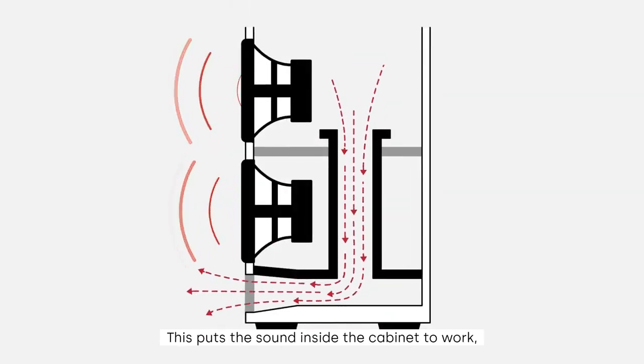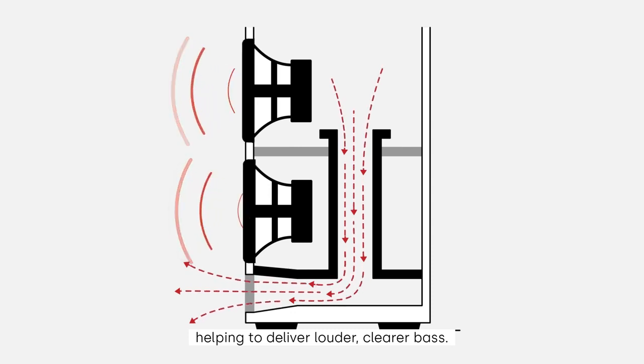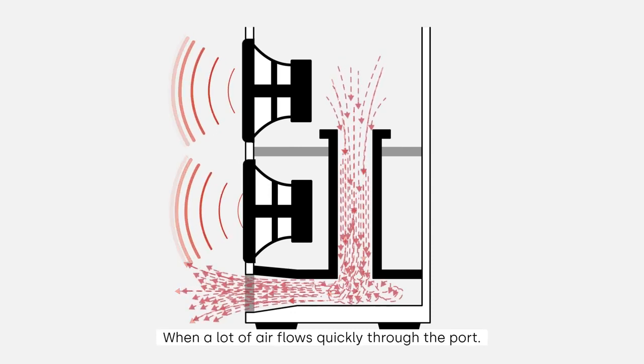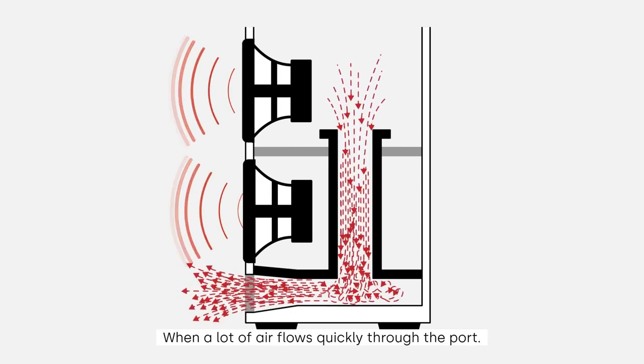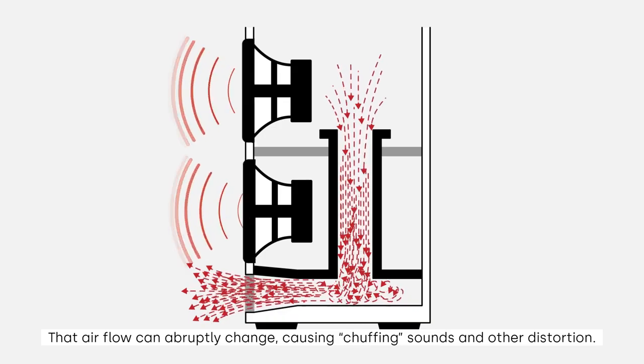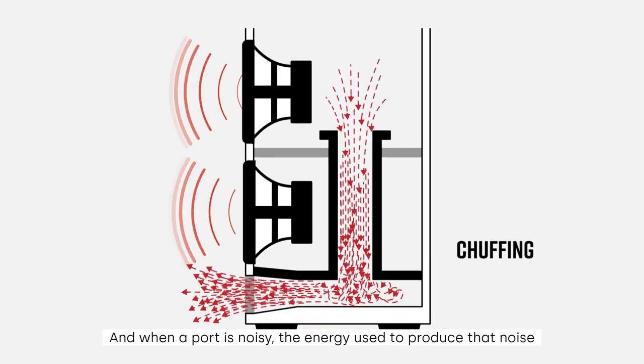This puts the sound inside the cabinet to work, helping to deliver louder, clearer bass. When a lot of air flows quickly through the port, that airflow can abruptly change, causing chuffing sounds and other distortion.